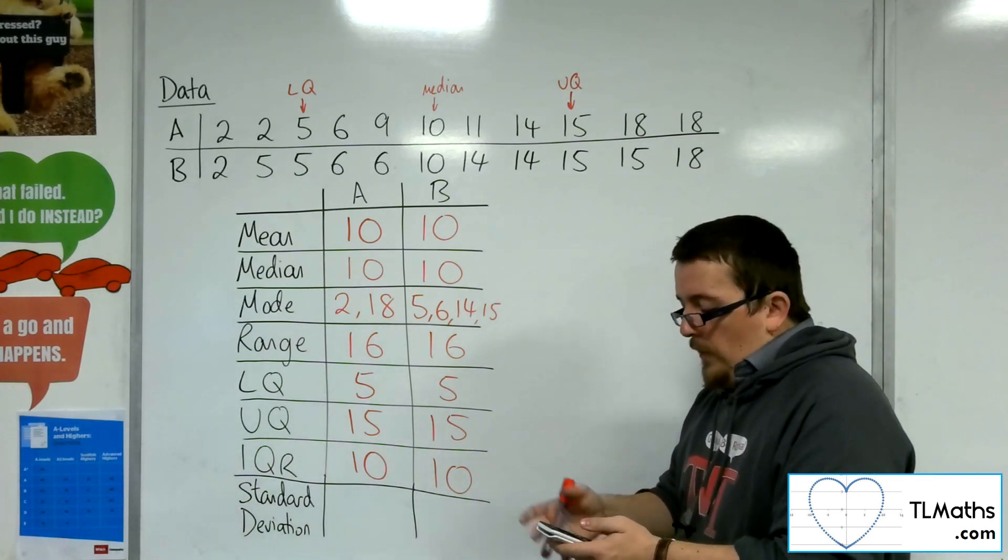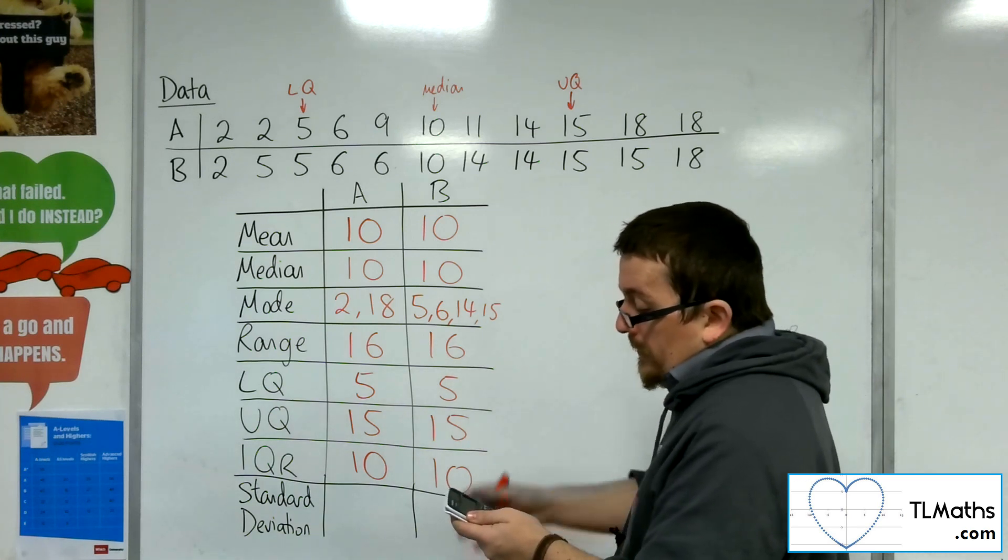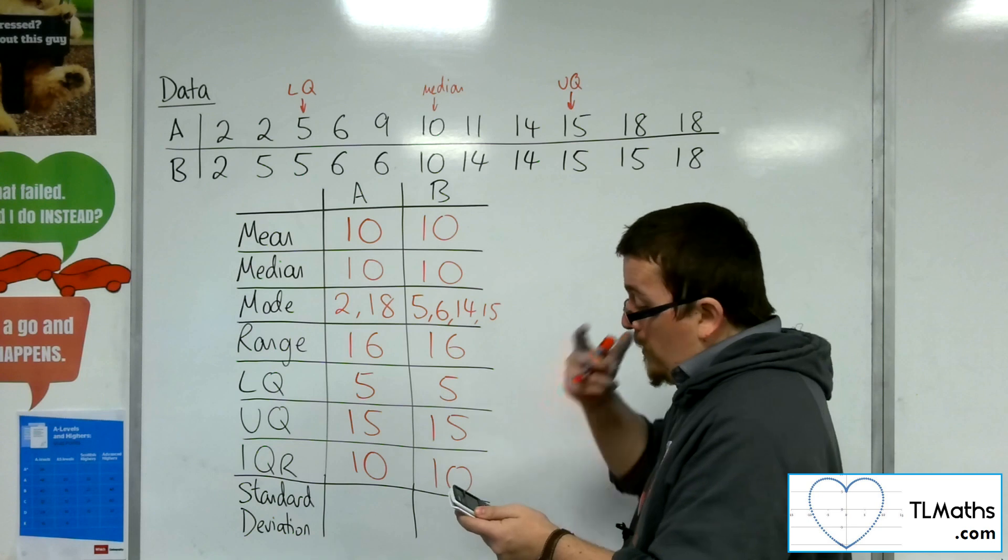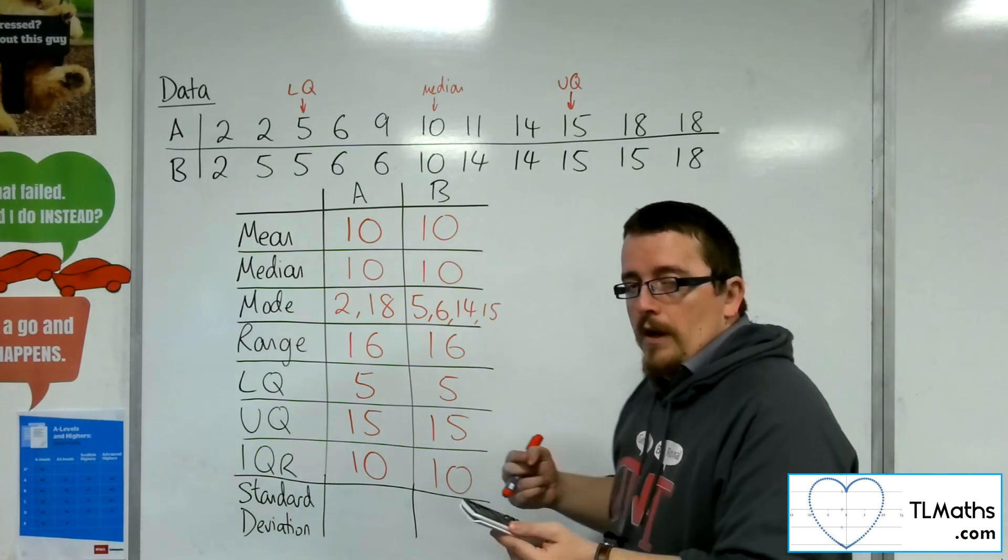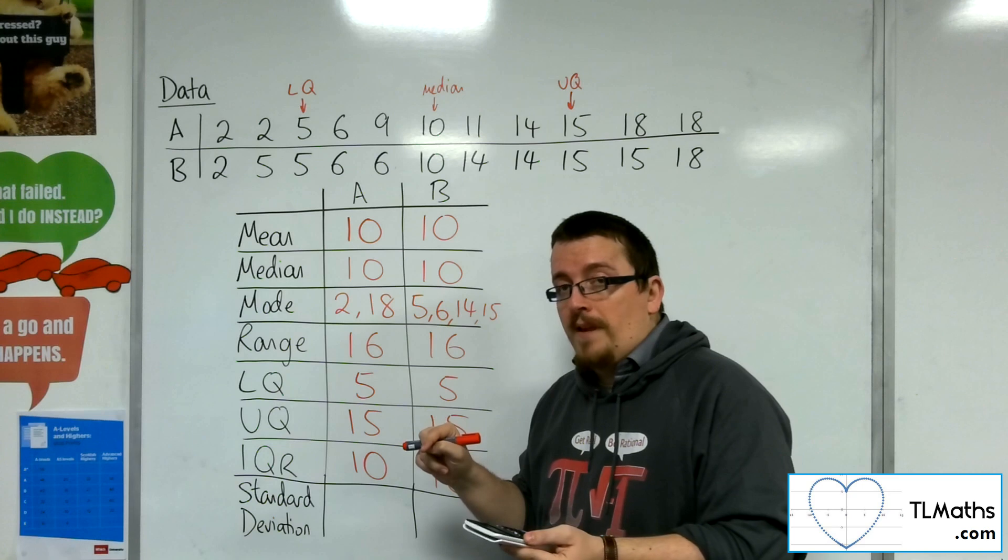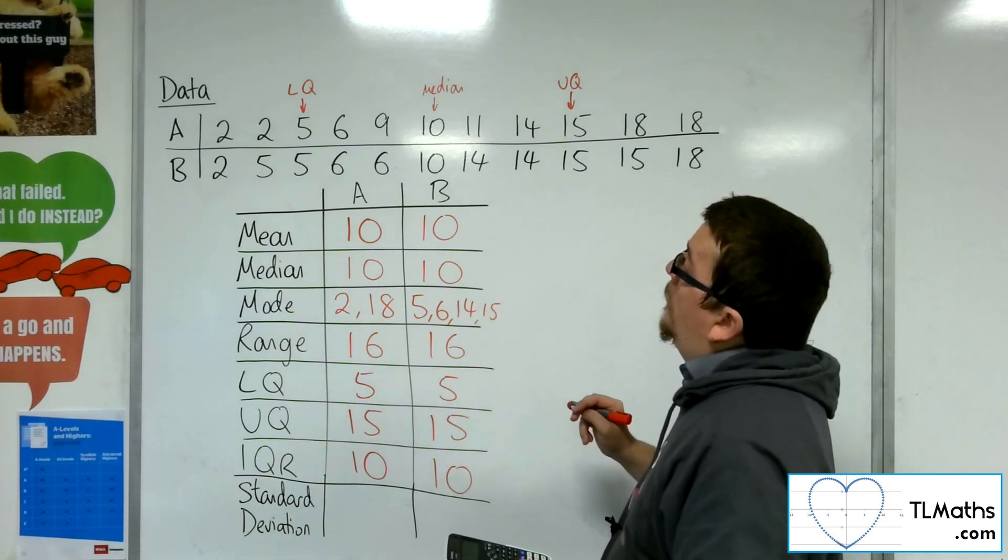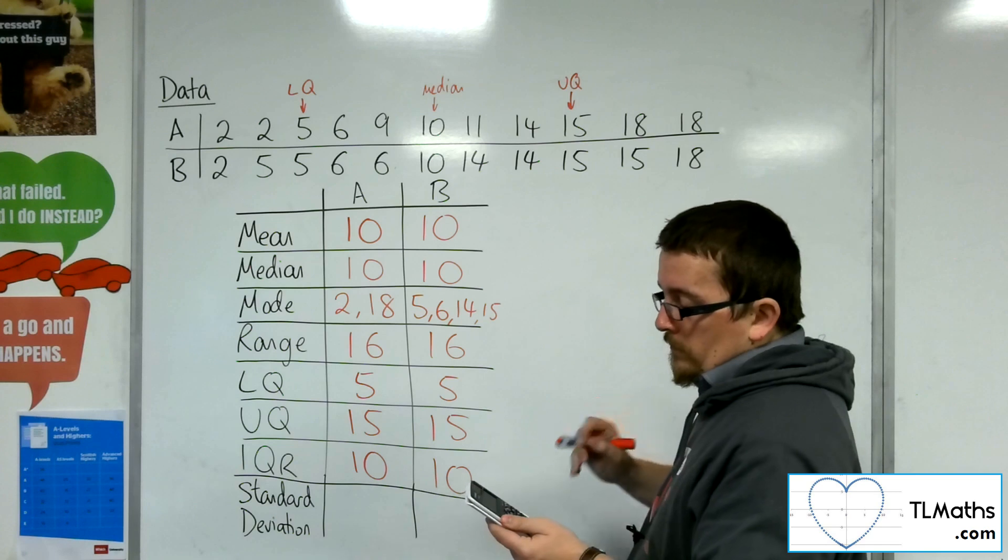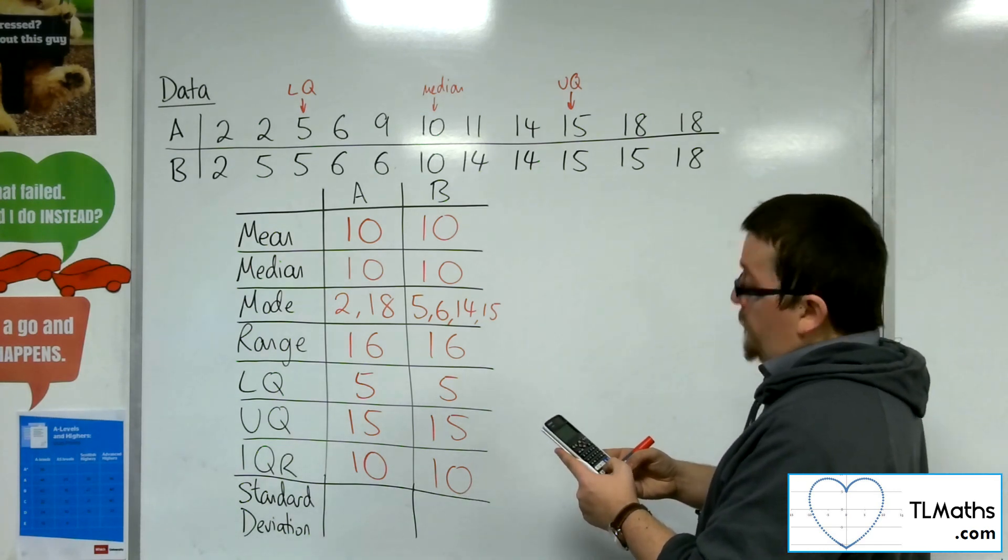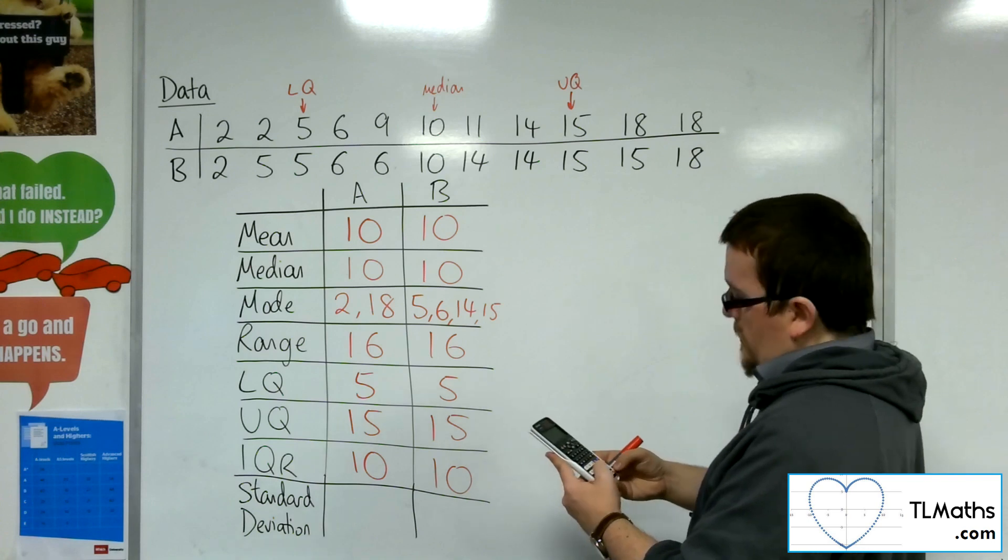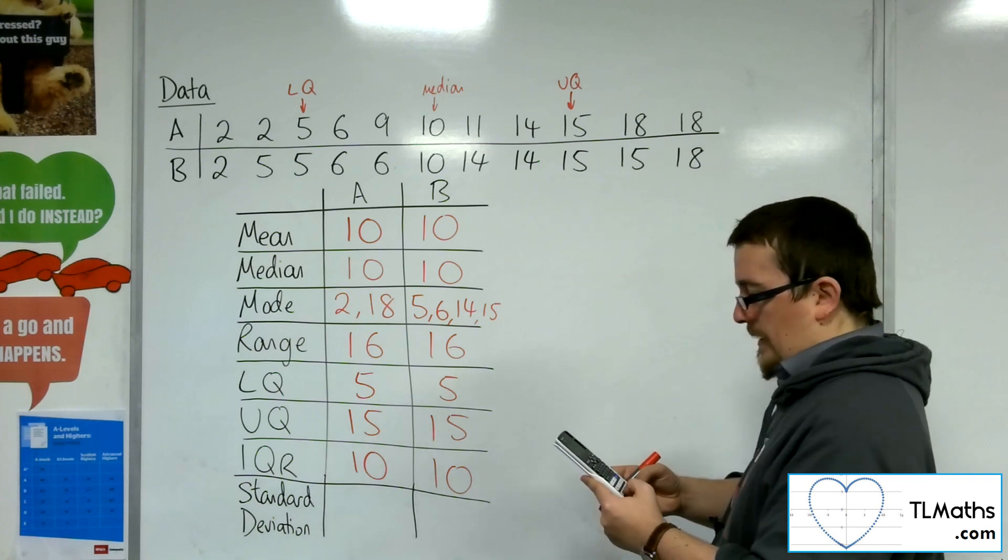So we want to go into menu, and then number 6 with our Casio ClassWiz, and then we want to go to number 1 for one variable. You can do the number 2 y equals a plus bx and look at them both at the same time if you like. I'm going to go in and just do them using this. So I'm going to type in the data, 2, 2, 5, 6, 9, 10, 11, 14, 15, 18, and 18.